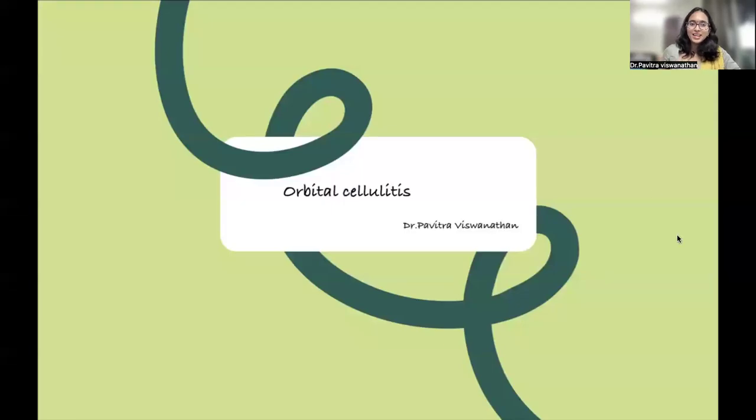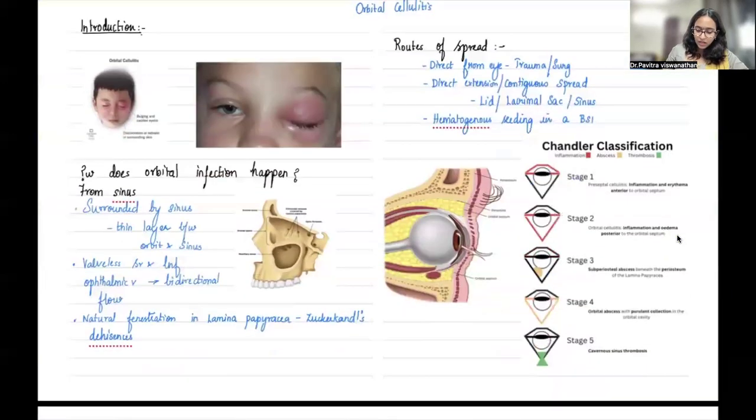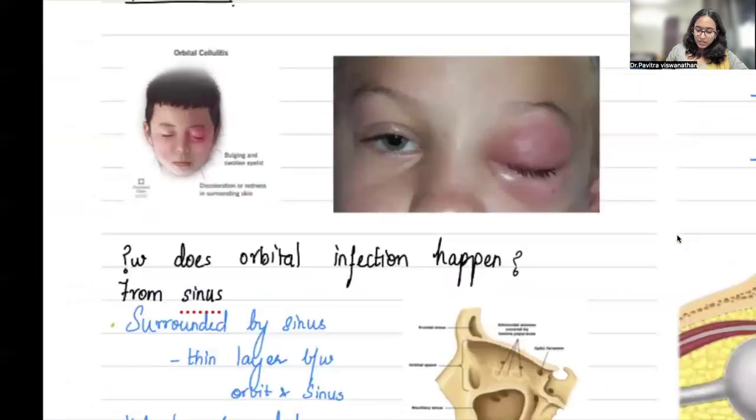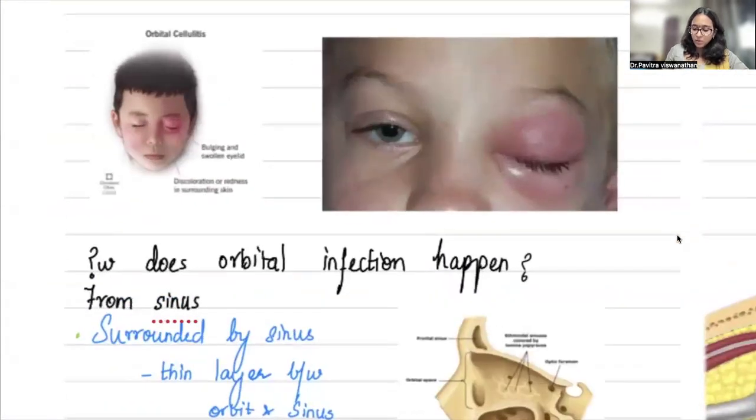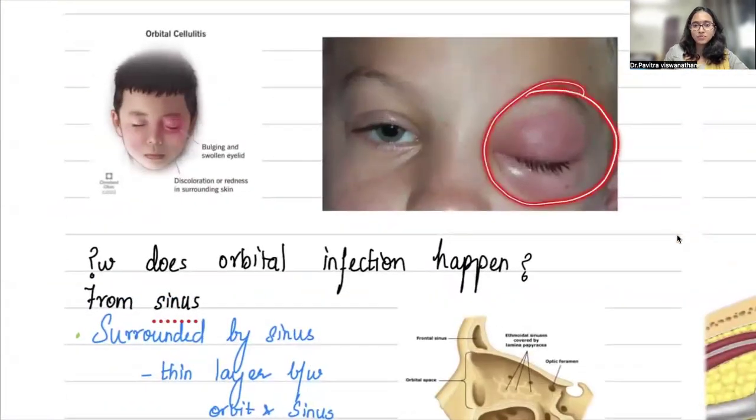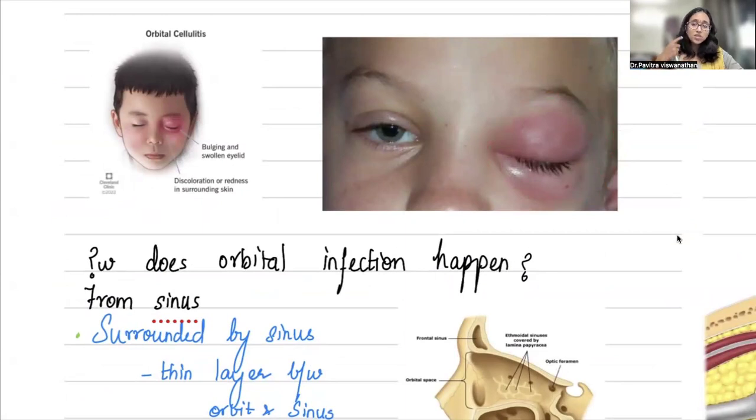Hello all, happy new year. Today we'll be discussing orbital cellulitis. You see a patient coming with eye swelling, and the parent says their child has had cough and cold for one week, fever on and off, but now high-grade fever and eye swelling for two days. You need to think: is it preseptal cellulitis or orbital cellulitis? But before we go to that, we need to know how eye infection happens.